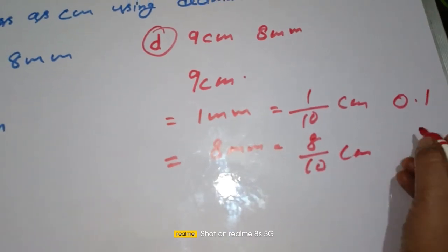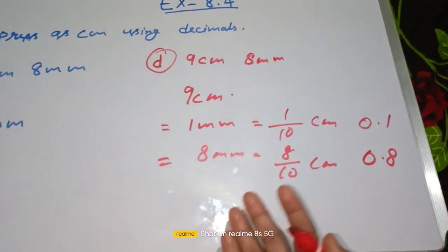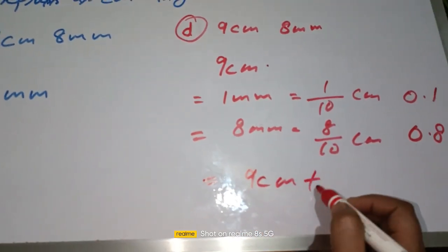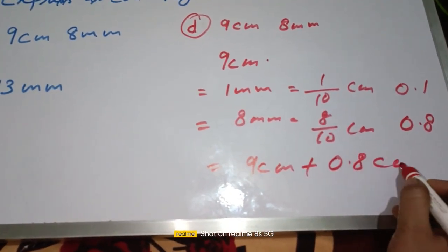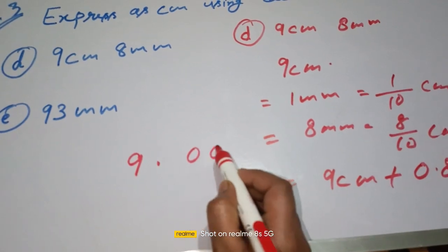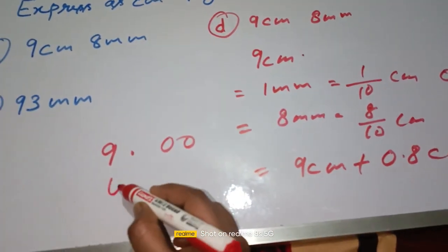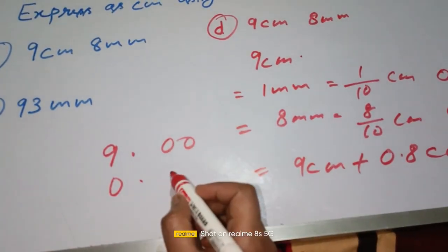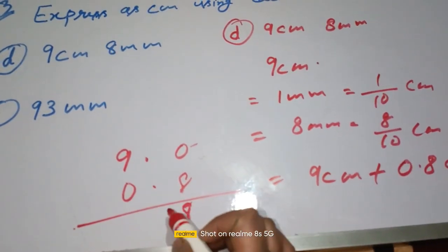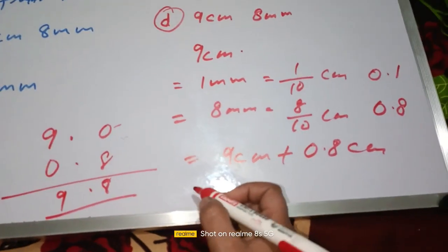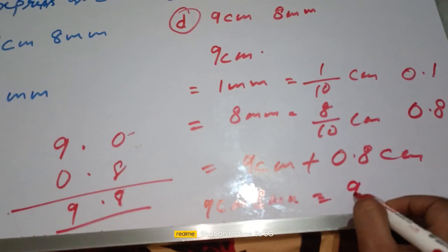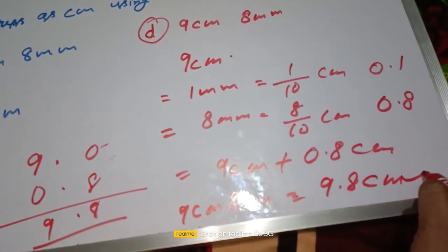So 8/10 cm is equal to 0.8 cm. Now our question is: 9 cm plus 0.8 cm. We add them: 9.0 plus 0.8 equals 9.8. So 9 cm and 8 mm expressed as a decimal is 9.8 cm. This is our answer.